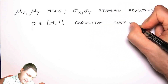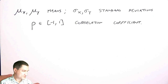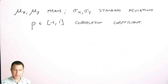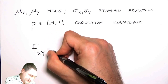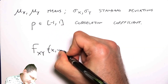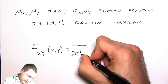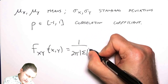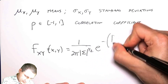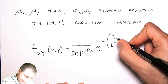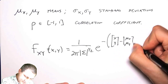So rho is going to be some number between minus 1 and 1, and this is called the correlation coefficient. Don't worry about what that means right now — we're going to come back to it in a couple of lessons. The PDF is a little bit messy, and it's easiest to first write it in terms of a matrix-vector form, which is generally a nice way to write things.